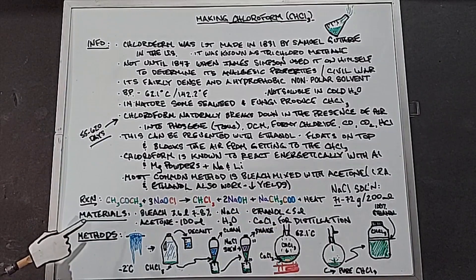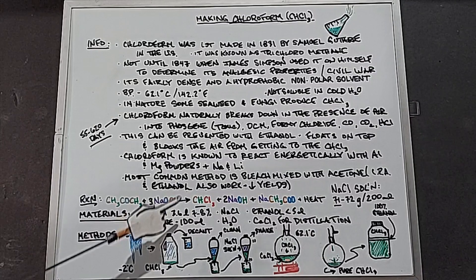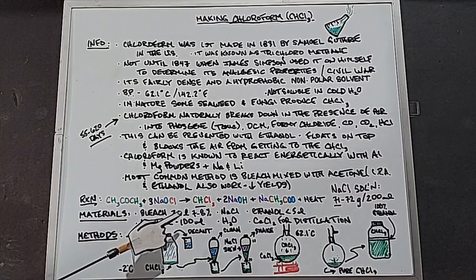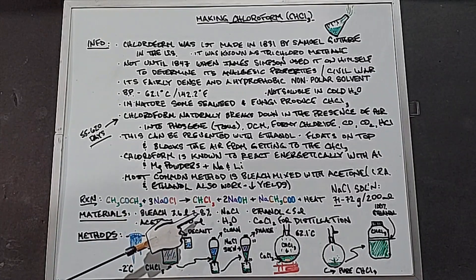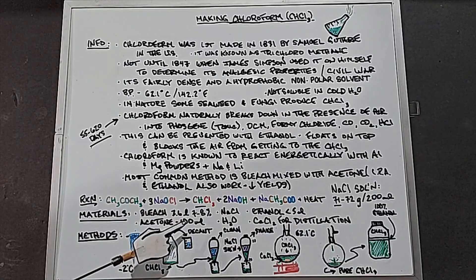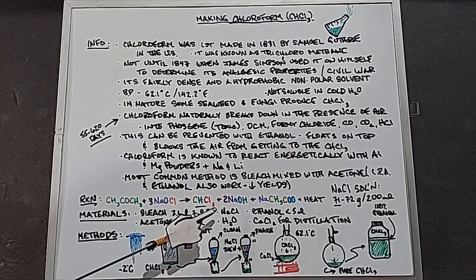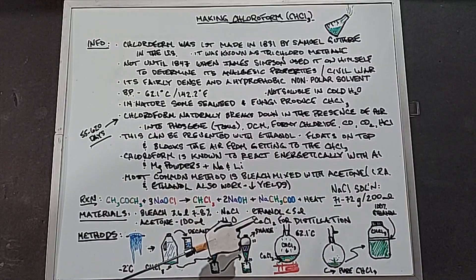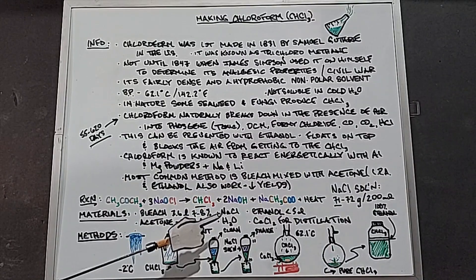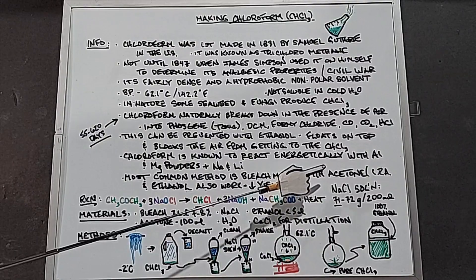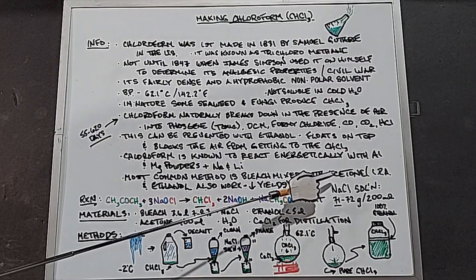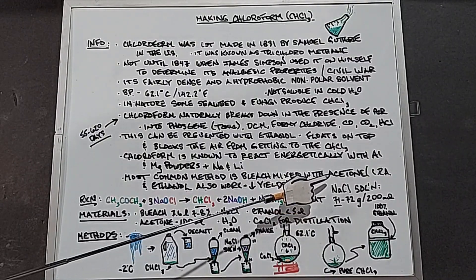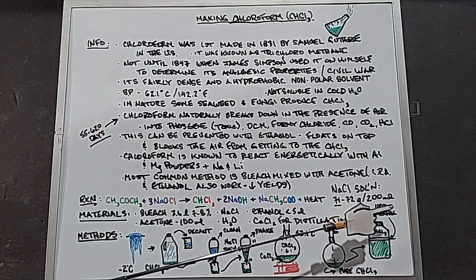The materials we need are bleach, about 3.6 liters, which is an average container in the United States at around 7% acetone, 100 milliliters. We need sodium chloride, water, ethanol as we discussed, and calcium chloride for our distillation. The salt and water are going to be used to make a salt solution, and I'm going to do that by mixing 71 grams of sodium chloride, iodine-free, with 200 milliliters of water.